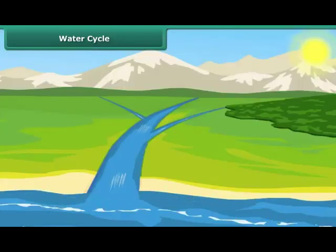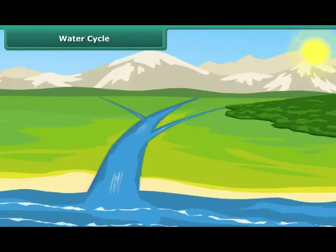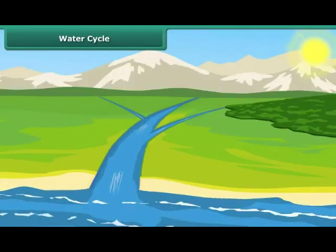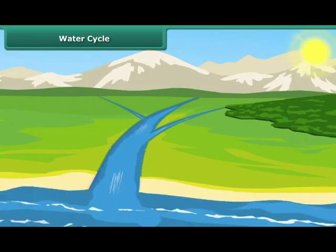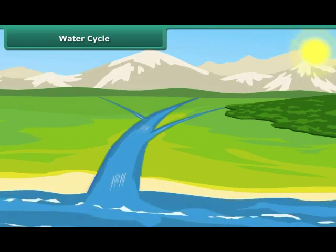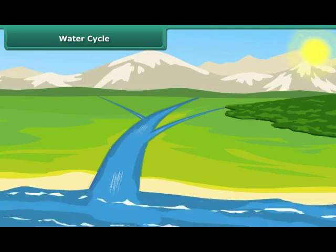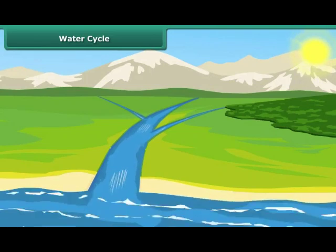The water received by Earth as rain, hail, or snow goes into the oceans, seas, rivers, and lakes.